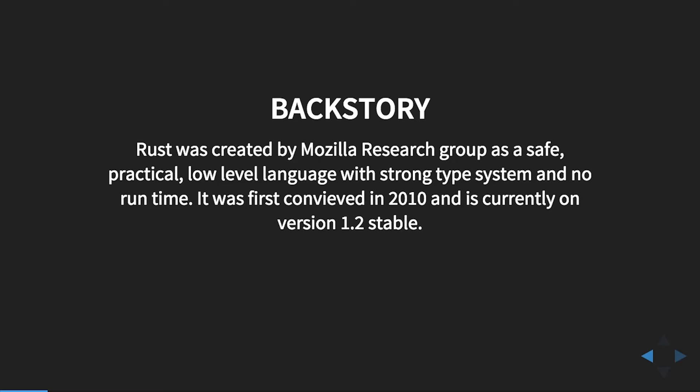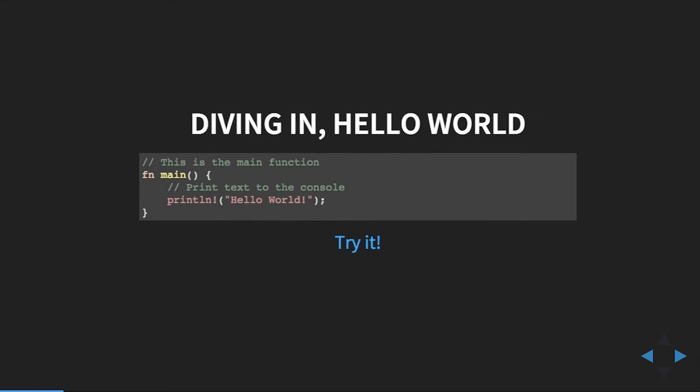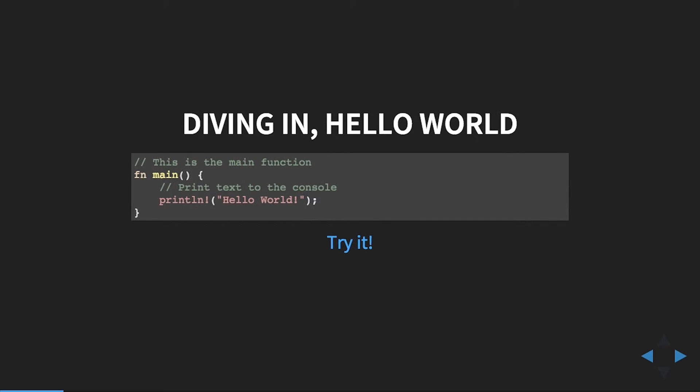We're just going to hop straight in. Starting off really simple, this is Hello World, and you'll notice the syntax is pretty minimal — functions are just 'fn', the rest is about what you'd expect, and print lines are actually macros. Anything with an exclamation point at the end is a macro, as is standard in some other languages, and you'll see macros used quite a bit. Rust has a pretty sophisticated system for them.